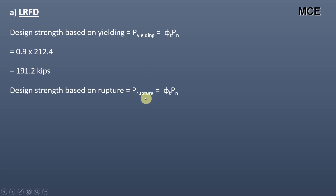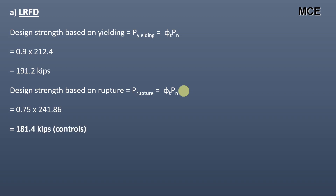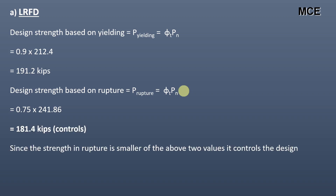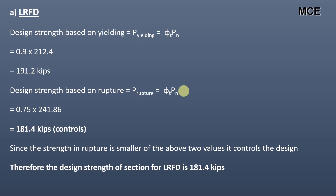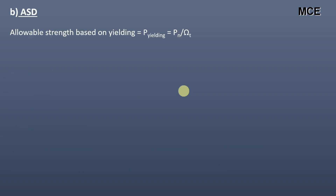The design strength based on rupture is given as the resistance factor in rupture times the nominal strength in rupture, which equals 0.75 times 241.86, which equals 181.4 kips. The strength in rupture is the smaller of the two values, so it controls the design. Therefore, the design strength of the section for LRFD is 181.4 kips.